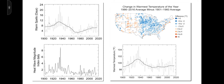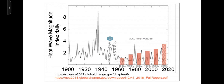This graph is warm spell days, this one is heat wave magnitude, and this one is warmest temperature of the year. As you can see, summers were much hotter in the United States prior to 1960. So by hiding all the data before 1960, they were able to show a little bit of an upwards trend.